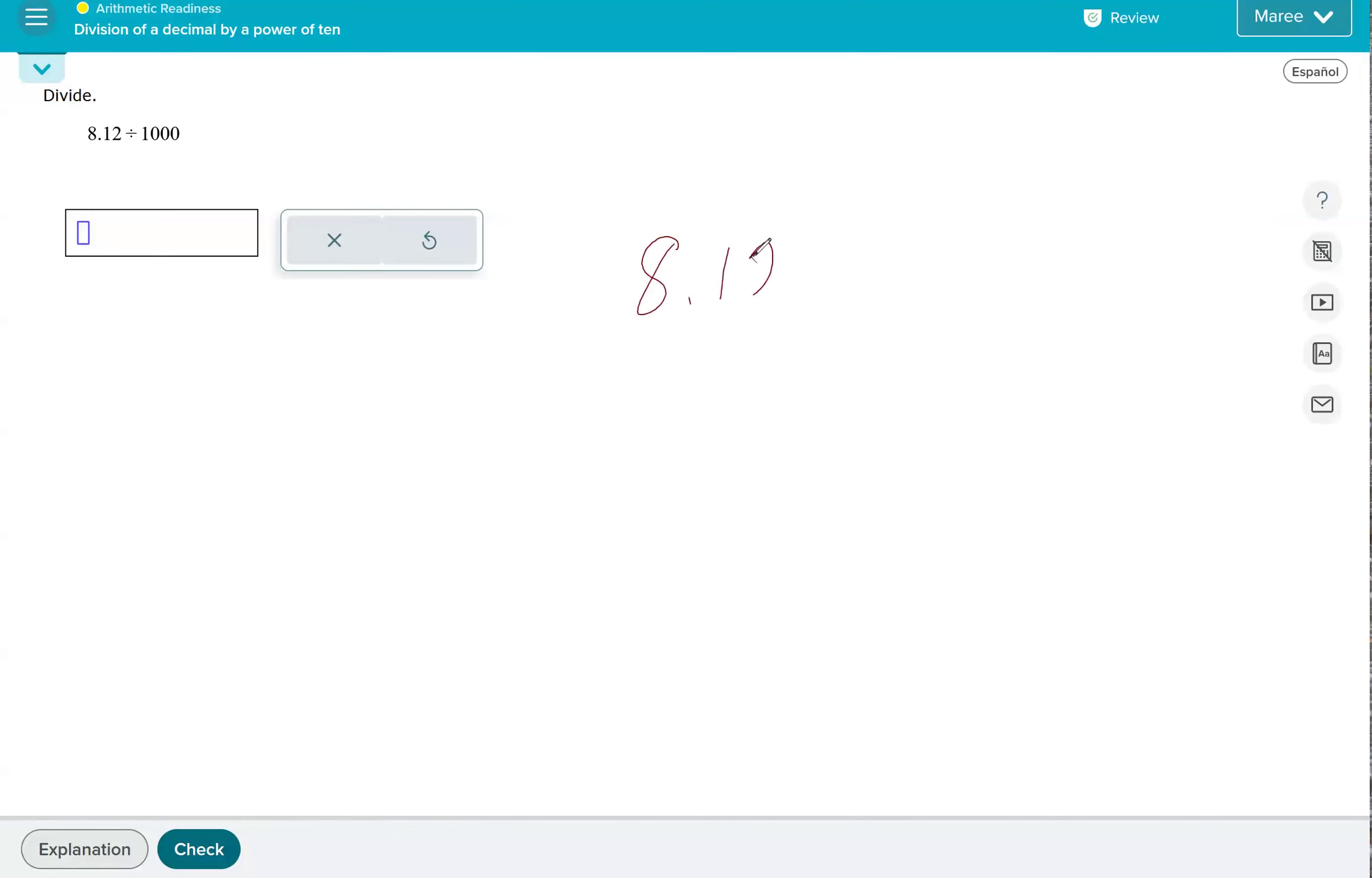Or I guess the way they wrote it, you count how many zeros there are. There's three. So we take our decimal. And what we're doing is we have 8 and 1,200 thousandths.